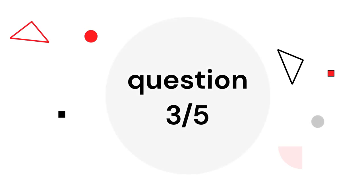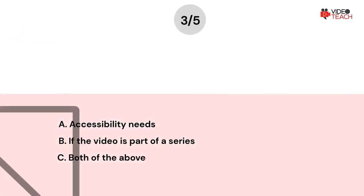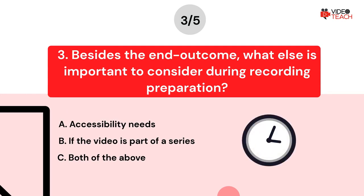Question number three. Besides the end outcome, what else is important to consider during recording preparation? Option A: Accessibility needs. Option B: If the video is part of a series. Option C: Both of the above. Now you have about 15 seconds to think about your answer.